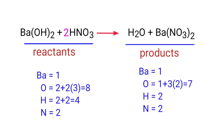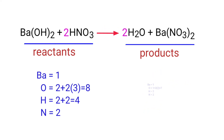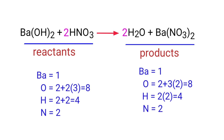Now we need to balance the oxygen and hydrogen atoms. To do this we need to put a coefficient of 2 in front of H2O. The equation is now balanced.